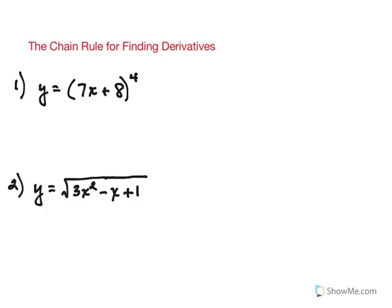Remember, the whole idea with the chain rule is you essentially start on the outside and work your way in, taking derivatives as you go. So in the first one, the outermost function is the part that's raising that 7x plus 8 to the fourth power. So that's where we start.